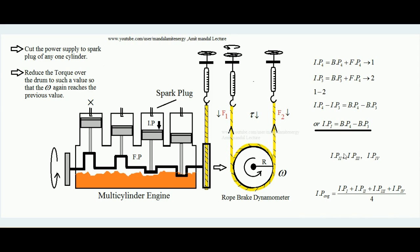The average indicative power of the entire multi-cylinder engine equals the summation of all individual cylinder indicative powers divided by the number of cylinders. This is the Morse test as conducted in the laboratory. Its purpose is to find the indicative power developed over the piston top when fuel ignites, determined from outside using only the dynamometer. A multi-cylinder engine is required because if only one cylinder existed and its power were cut, the engine would stop entirely.